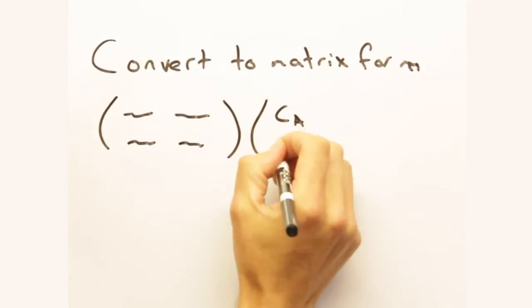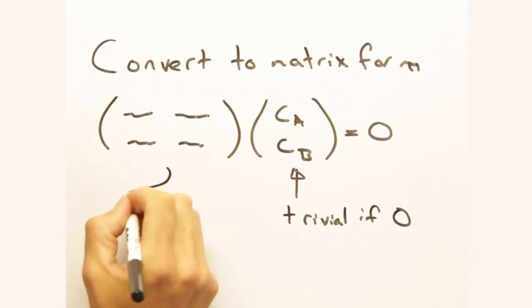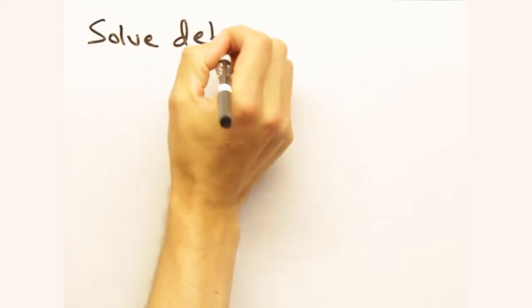Indeed, and we're left with two solutions. On the one hand, we have the trivial solution for CA and CB equals zero, but that gives us a null wave function, and that has no physical significance. On the other hand, we have non-trivial solutions to CA and CB by making the determinant of this matrix equal to zero, and we solve for the energy that way.